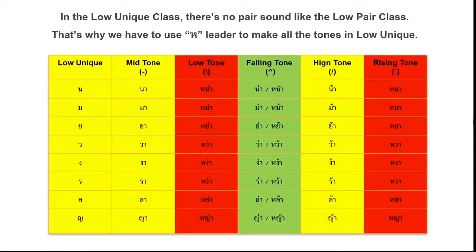So in the Low class, you will see we have นอหนู, มอมา, ยอยัก, วอแวน, งองู, รอเลือ, รอลิง, and ยอผู้หญิง.